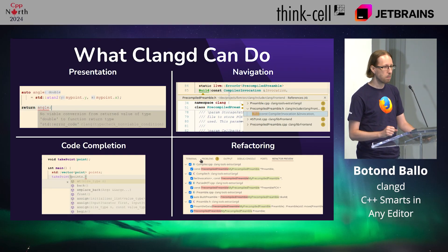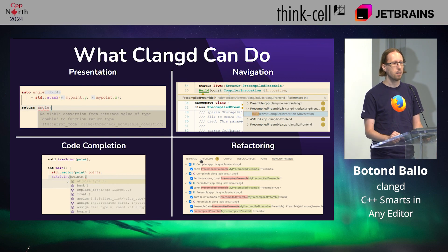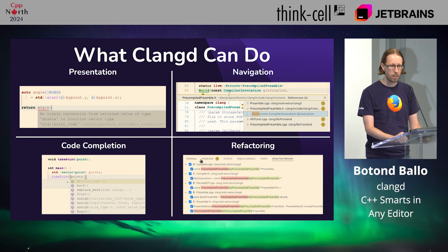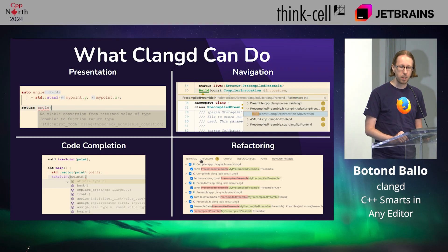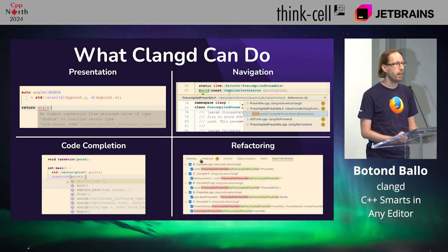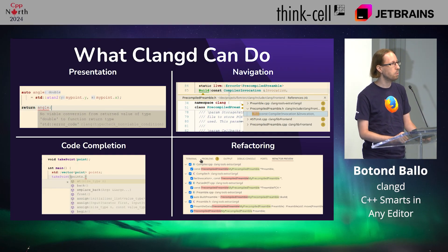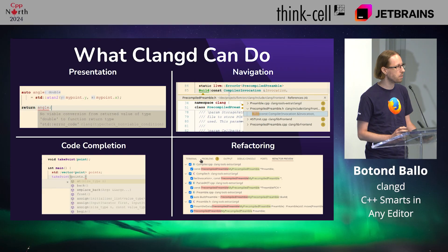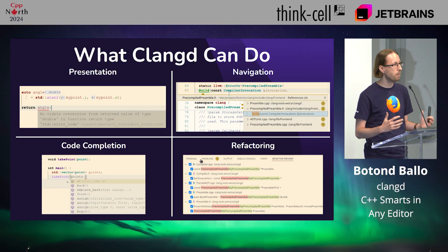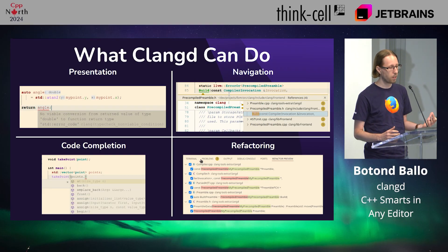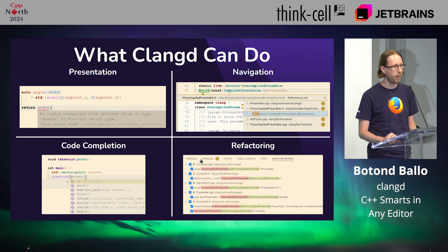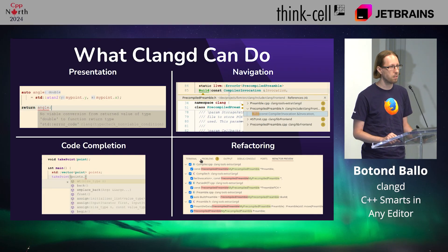It also shows the types. The second statement shows you errors as you type. Clang D also has navigation features, such as searching for all references to a symbol across a code base. This works across translation units, and it's also semantically aware — if you have a function that's overloaded and you search for a particular overload, it will only find calls to that overload.